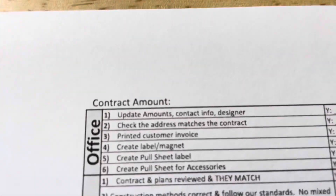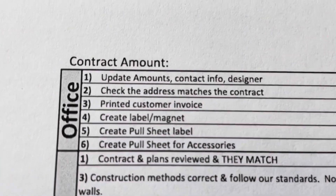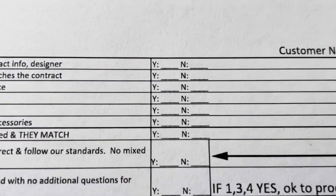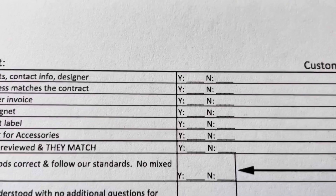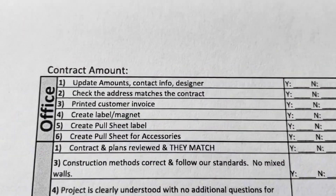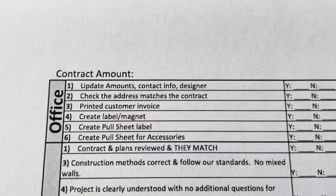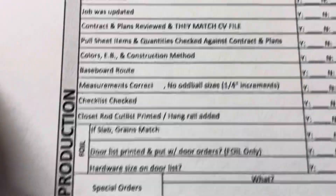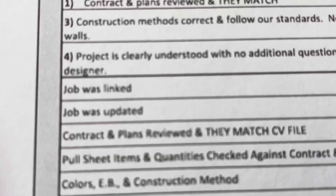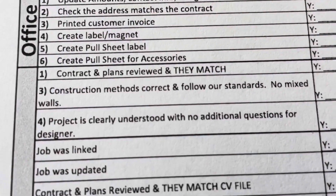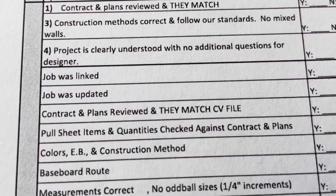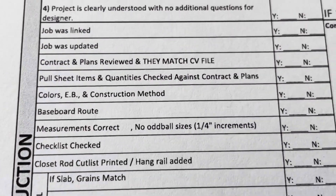When we get a new contract in, this is the stuff that the office has to do — they check off on it and initial it. Everything on here is a yes or no — we're looking for all yeses. Some of these questions might sound funny when you read them, but we've written them that way so that we get a yes. When we get into production, there's a whole bunch of stuff that matches what's on the designer checklist — construction methods, follower standards, project clearly understood, job was linked, job was updated, contract plans.